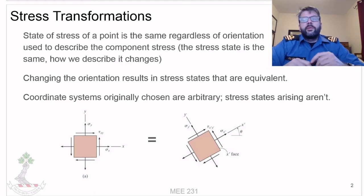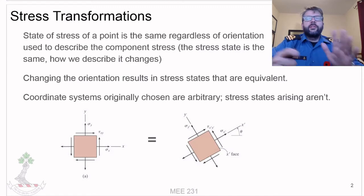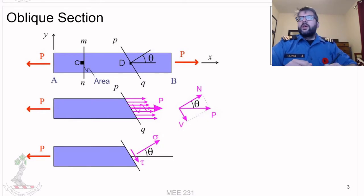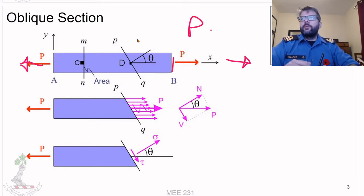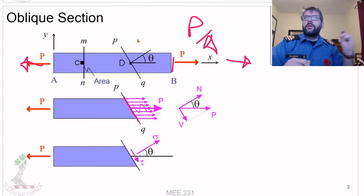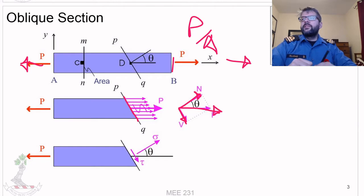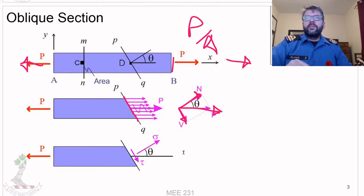The coordinate system we choose is arbitrary — typically whatever makes sense when solving the problem. The stress states that arise aren't arbitrary, though. For example, if we have a section and we're pulling on it, taking a straight cross-section gives us just P over A, whereas taking an oblique section results in some combination of normal stress and shear stress that must arise to produce the same resultant force.